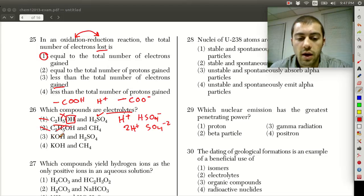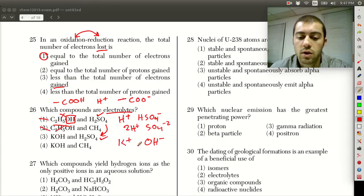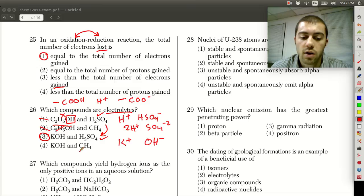Looking at the third choice, we have KOH and H2SO4. We already said H2SO4 is good as an electrolyte. KOH as well, we would have K+ and OH-. You should recognize this as a strong base. A strong base is going to form hydroxide ions, and we have the K+ ion here as well. So the answer is choice three. Looking at choice four, we have another organic compound in CH4. That's going to be a non-electrolyte.